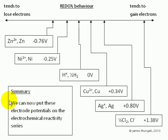So we can now put these electrode potentials on the electrochemical reactivity series. And what we see is that the values which are more negative represent the half cells which tend to lose electrons. And those which are more positive are the half cells which tend to gain electrons.